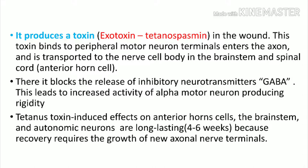When tetanus enters our nervous system, it grows there and produces a toxin. This toxin is an exotoxin called tetanospasmin, which produces all the complications seen in tetanus.